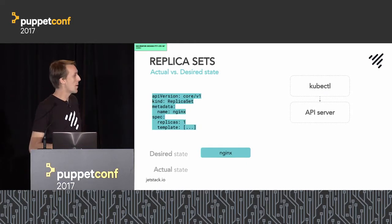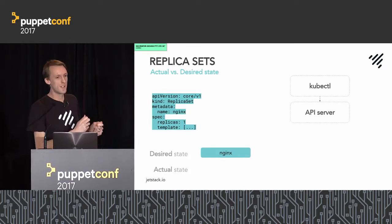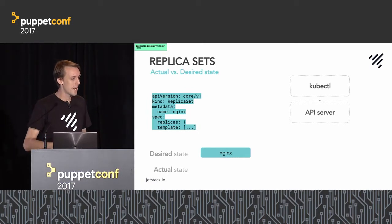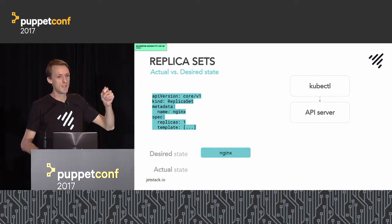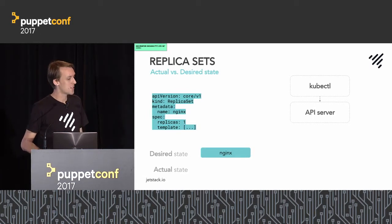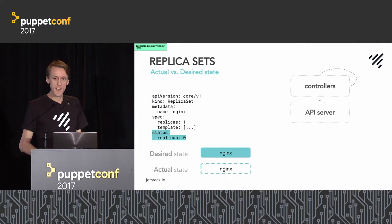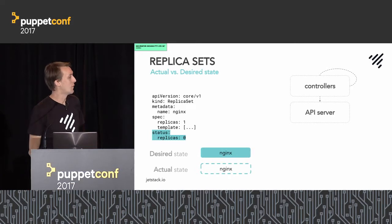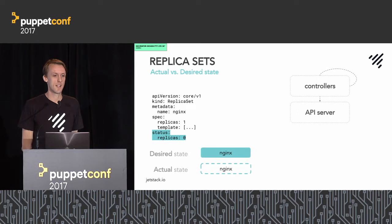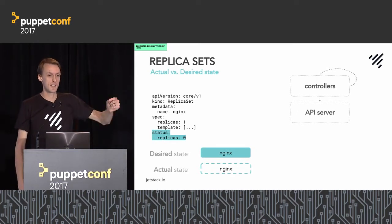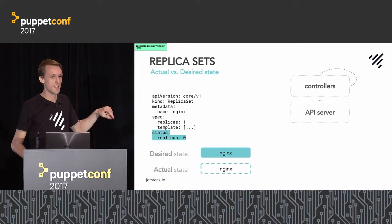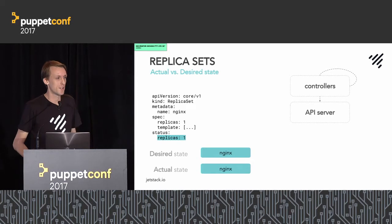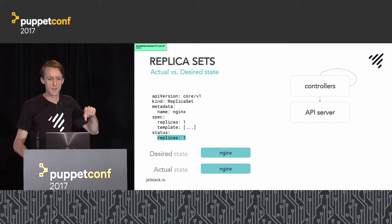One typical example of a resource is a replica set. An important point is the concept of actual versus desired state. You describe your workload — for example, running Nginx with one replica — in YAML and submit it to the API server. At that point, there isn't actually one running yet; we've just declared the desired state. A controller watches the spec and adds a status stanza representing the actual cluster state. The controller then works to schedule a container to a node and reports back its progress, updating the actual state to replicas: one.